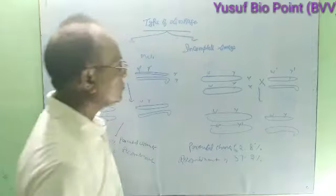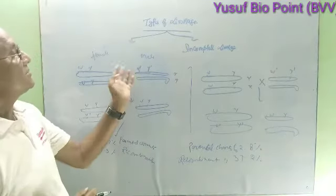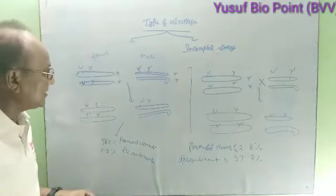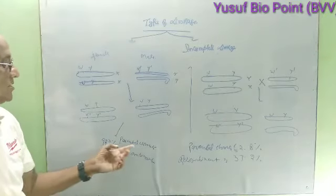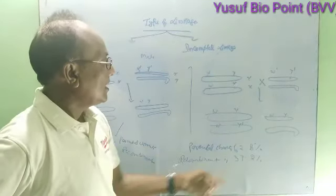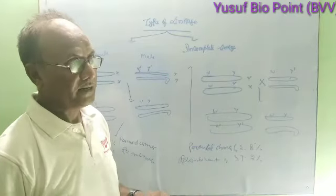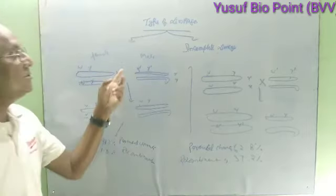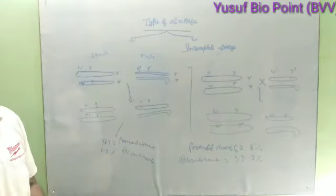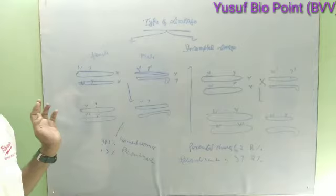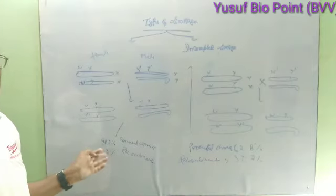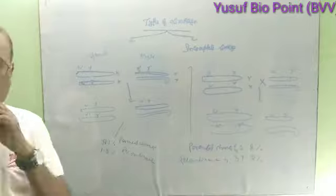Recombinant characters are found. So we see that in the linked position we get about 98.7% parental characters, while in the non-linked genes we get about 62.8% parental characters and 37.2% recombinant characters. In this way we can say that due to linked genes, the parental characters are found more in the offspring.